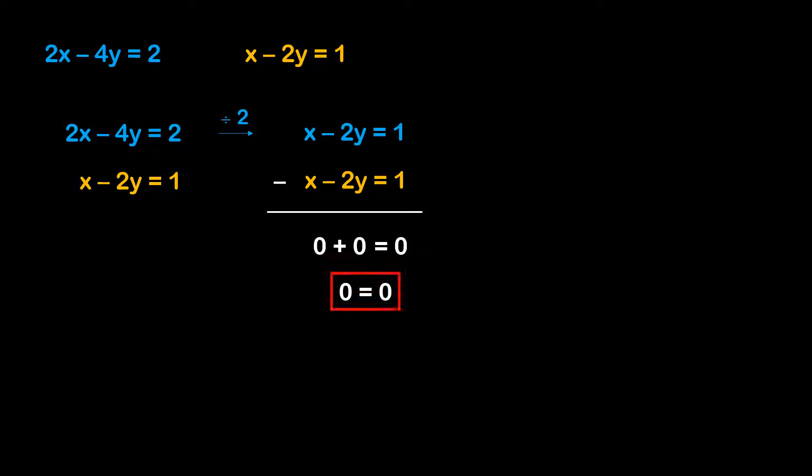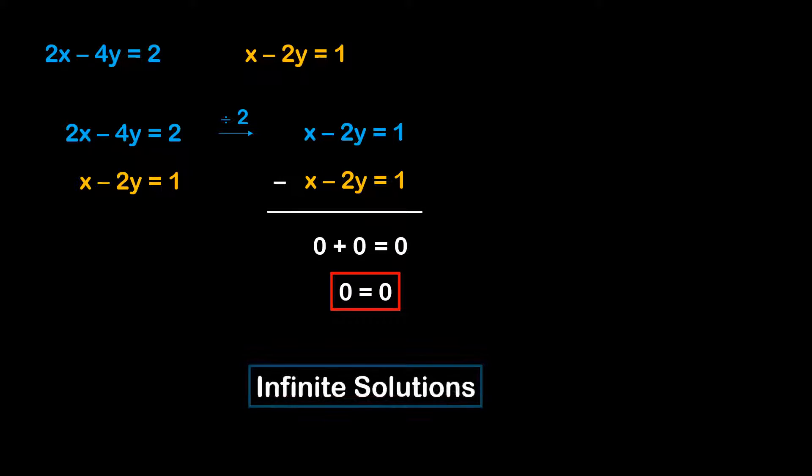That statement makes perfect sense — 0 is of course equal to itself. What we're going to find when solving a system of linear equations is that when we get a statement saying a number is equal to itself, we have an infinite number of solutions, because that statement is true for any values of x and y.